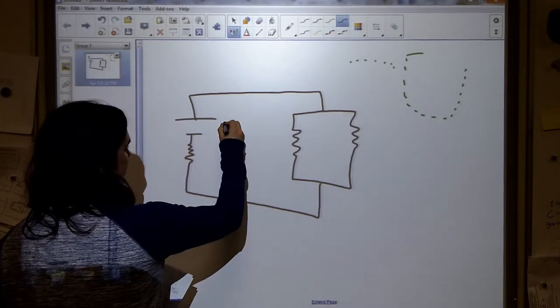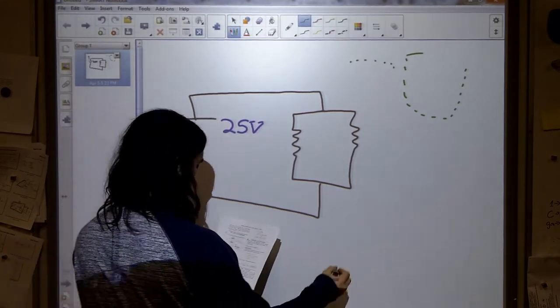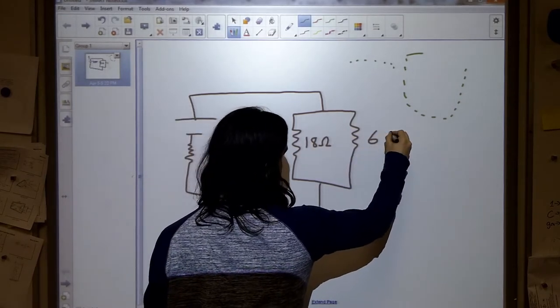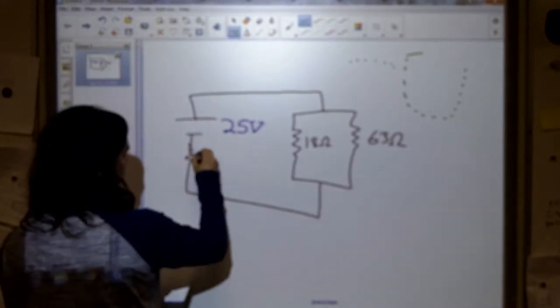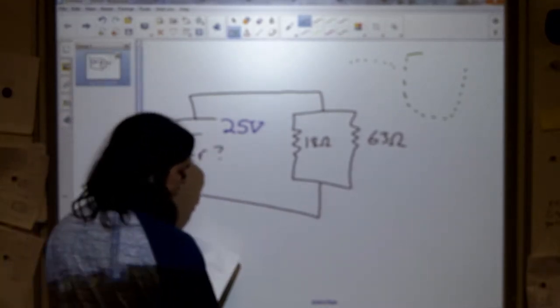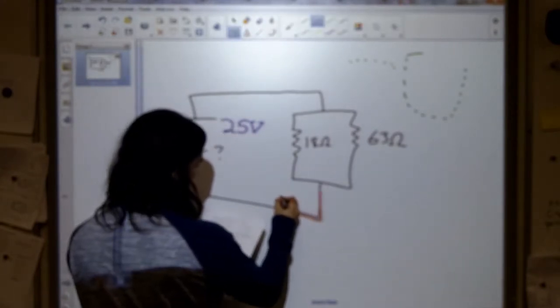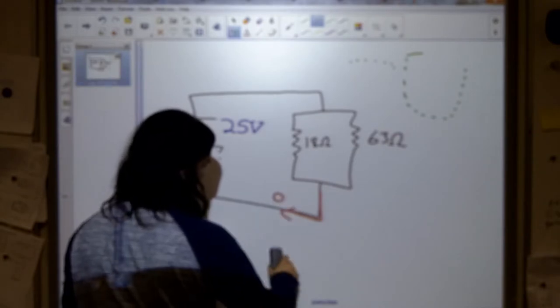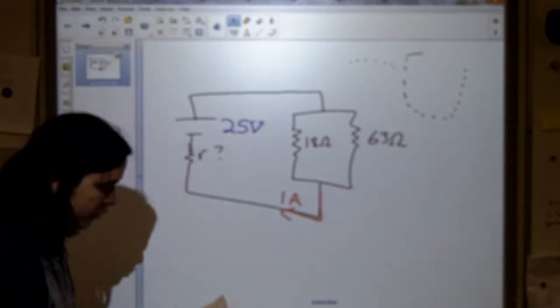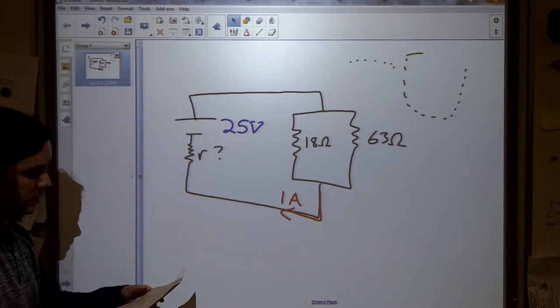So the information that we've been given, at least for me, is 25 volts for my total battery potential difference. We've got 18 ohms for one and 63 ohms for the other. The question is, what is the resistance of this resistor, little r. The last piece of information that they give us is, I've got here, they're saying that the total current is, not zero, it is 1 amp. I was thinking it was 0.1 amp for 100 milliamp. Okay, so we need to try and find the resistance there.